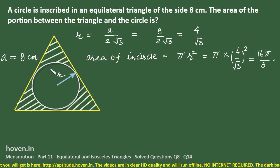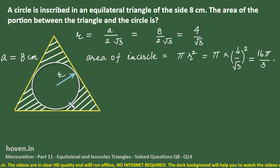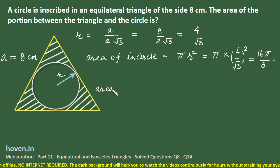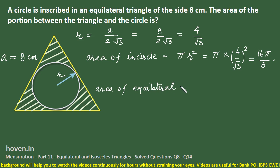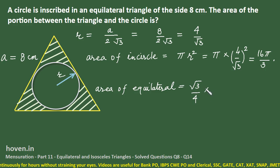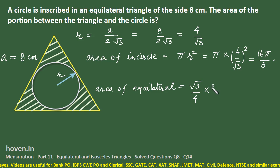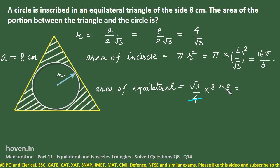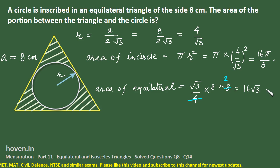We have obtained the area of this circle. We also know the area of the outer equilateral triangle. The area of the equilateral triangle is given by the formula (√3/4) × a². Since the side is 8, this gives (√3/4) × 8 × 8, which simplifies to 16√3 square centimeters.